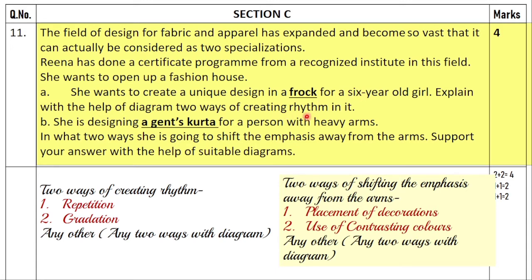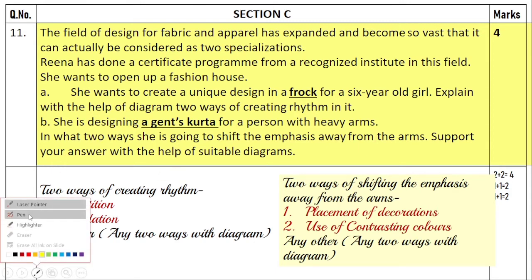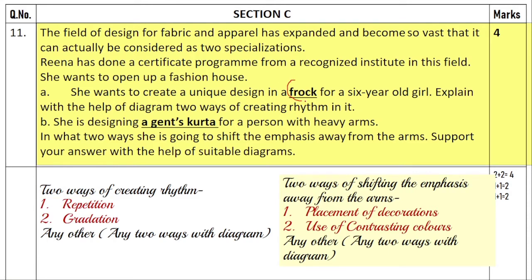Explain with the help of a diagram two ways of creating rhythm in the frock. We have to design a frock for a six-year-old and create rhythm. Whenever you have such questions, don't forget to make a diagram — these diagrams always fetch you very good marks. The B part is: she is designing a jainch kurta for a person with heavy arms. In what two ways is she going to shift the emphasis away from the arms? Support your answers with suitable diagrams. The first part carries two marks, and the second also carries two marks.